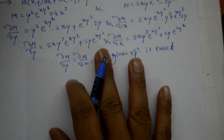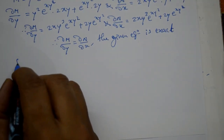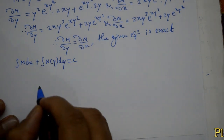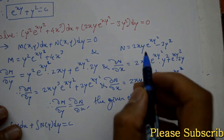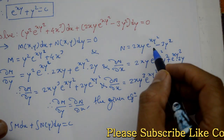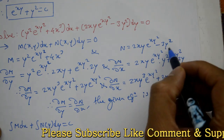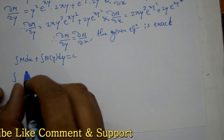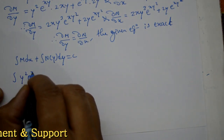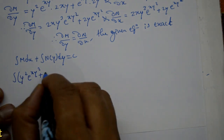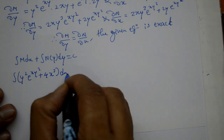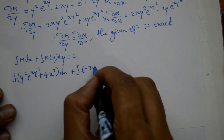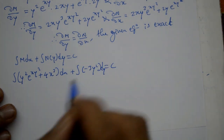The given equation is exact ho gaya. Agar exact ho to integration karenge: integration of M dx + integration of N(y) dy = c. Idar N(y) ka matlab — N mein koi x variable nahi rehna chahiye, usko hi consider karenge. N mein x-free term hai: minus 3y².